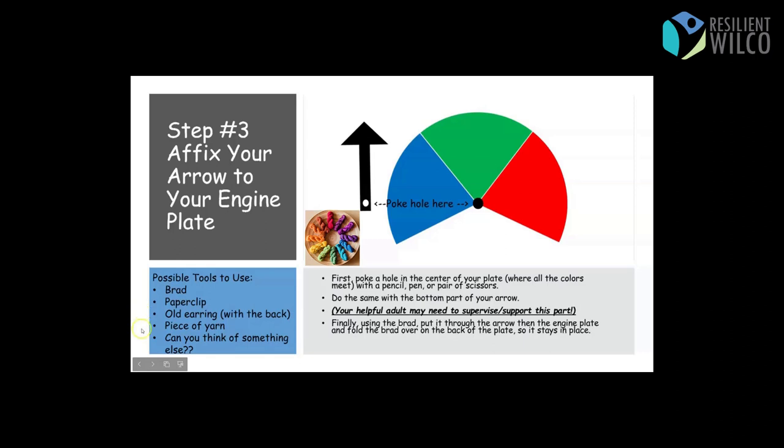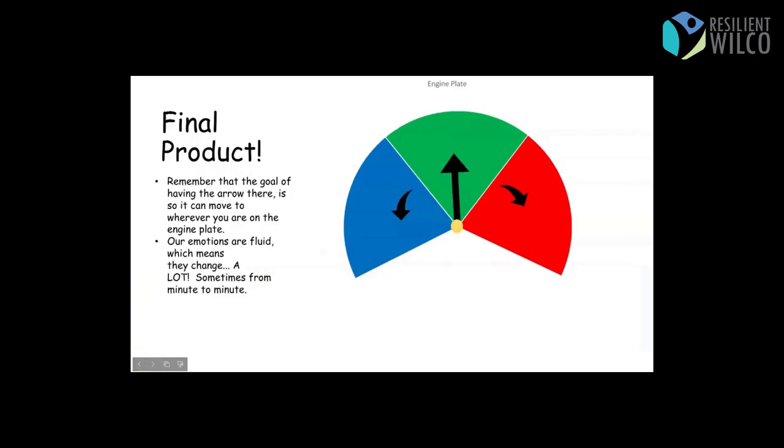Because the goal of the arrow is that it can move wherever you are on the engine plate. Because remember, this is a tool for you to figure out where you are. And when you're feeling a certain way, you're going to want to move the arrow to wherever you are. So I'm not always in the green. Some days I wake up, I'm in the blue. And I might just check in on my engine plate, move my arrow to the blue. But then maybe I do something like a breathing exercise and I get back to the green. And then I can move it back to the green. Our emotions are fluid, which means they change a lot. Sometimes from minute to minute. And that's normal. That's the human experience. But what's really important to being calm and living your best life is to know where you are so that you can get back into the green, into that window of tolerance that I mentioned earlier.